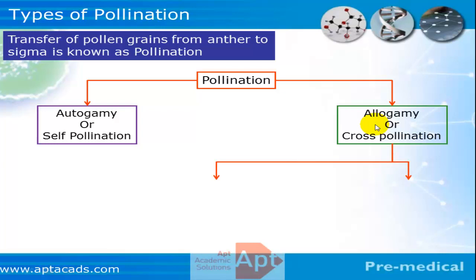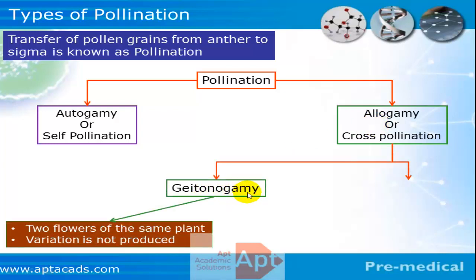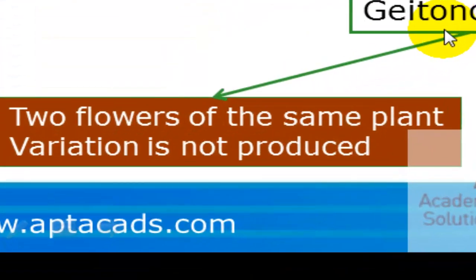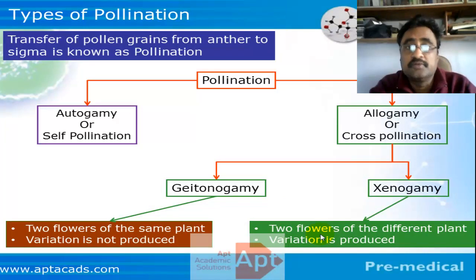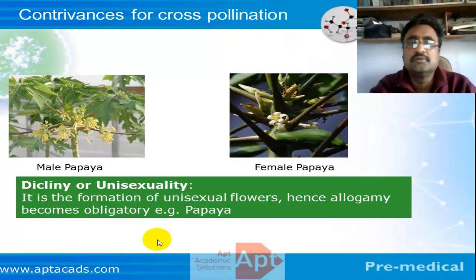Cross-pollination can be divided into two parts: geitonogamy and xenogamy. In geitonogamy, the flowers are present on the same plant — male and female flowers are on the same plant. Technically, genetically it is not a cross-pollination because the genes belong to the same parents. In xenogamy, the flowers are present on two different plants, so genetically it is a true cross-pollination and will create variation, whereas geitonogamy will not create any variation.